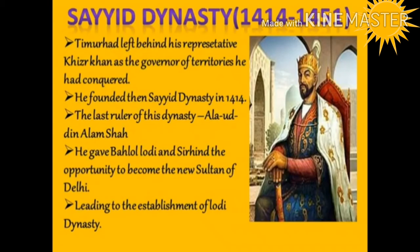Sayyid Dynasty, 1414–1451. Before leaving Delhi, Taimur had left behind his representative Khizr Khan as governor of the conquered territories. Khizr Khan founded the Sayyid dynasty in 1414, which lasted until 1451. The last ruler of this dynasty, Alauddin Alam Shah, abdicated the throne in 1451, giving Bahlul Lodi, then governor of Sirhind in Punjab, the opportunity to become the new Sultan of Delhi.